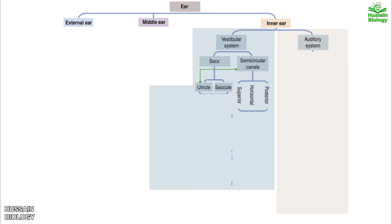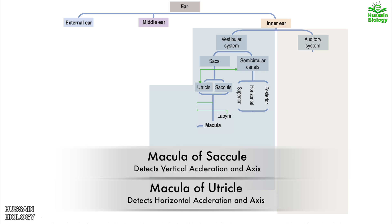As shown in the diagram, the utricle and saccule form the macula. The macula of utricle detects horizontal acceleration and axis, whereas the macula of saccule detects vertical acceleration and axis.